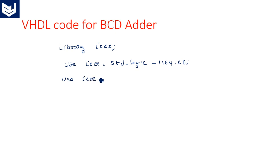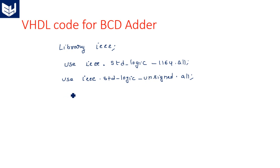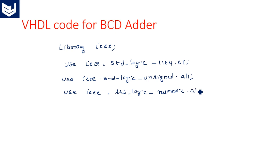Along with that, depending on the uses of internal programming parameters, the corresponding package should also be called. So: use IEEE.STD_logic_unsigned.all — because whenever we are performing a direct addition with plus, you have to use this unsigned package. And also use IEEE.STD_logic_numeric.all. These are the two new packages we have to call here for the successful operation of this BCD adder.